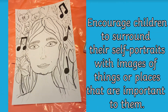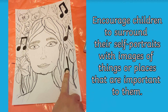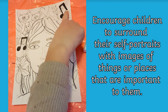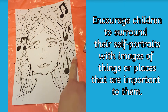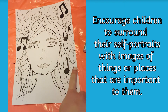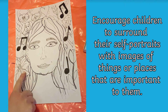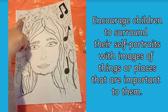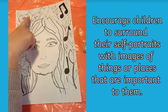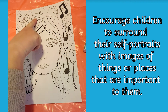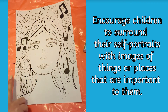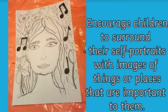Before asking the children to add colour to their self-portrait, ask them to surround their drawing with items, colours and places which reflect them and their life, as this is very much in the style of Frida Kahlo herself. So for my drawing, I've included animals, musical symbols and elements of nature, as I love my pets, to sing and write music and to be outside.